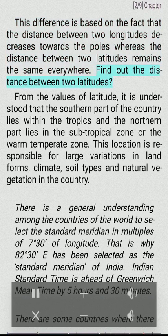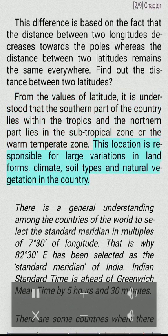Find out the distance between two latitudes. From the values of latitude, it is understood that the southern part of the country lies within the tropics and the northern part lies in the subtropical zone or the warm temperate zone. This location is responsible for large variations in landforms, climate, soil types and natural vegetation in the country.